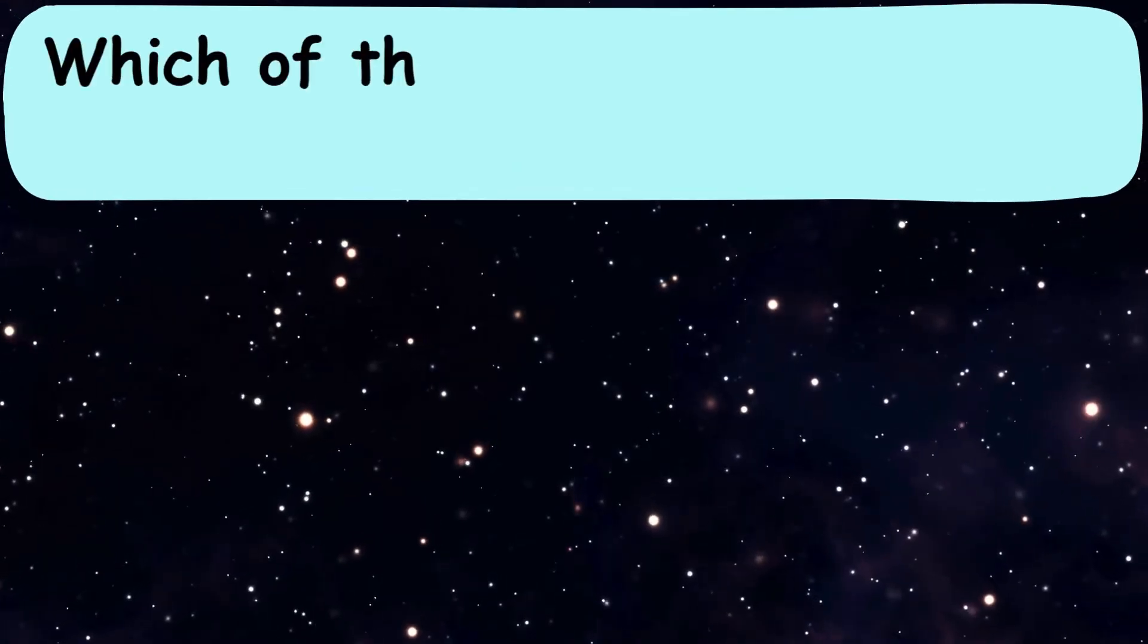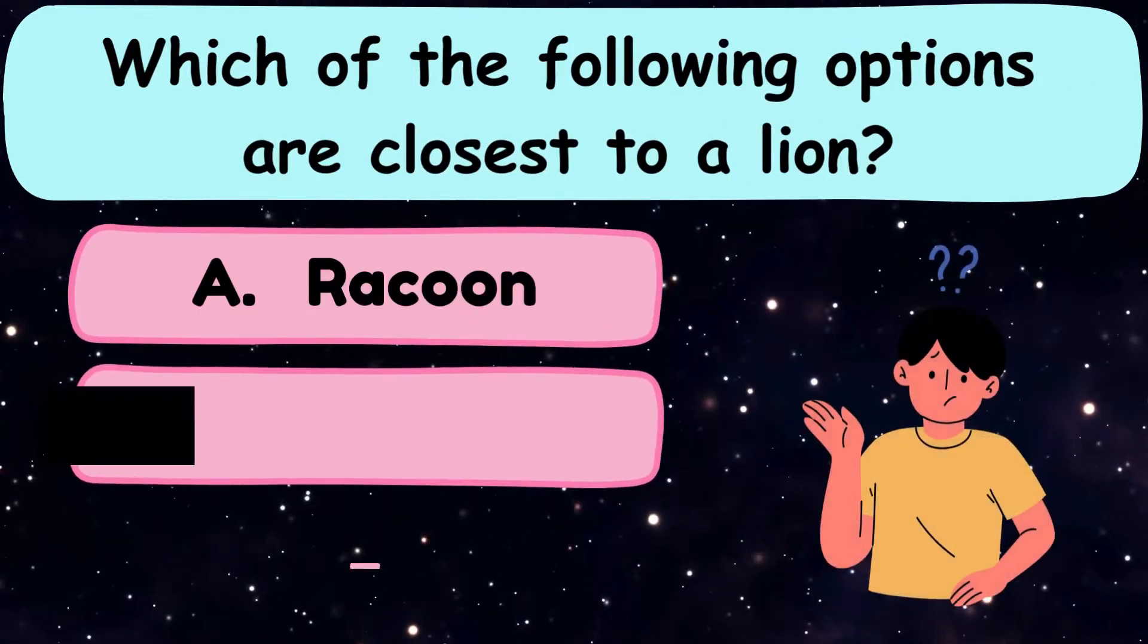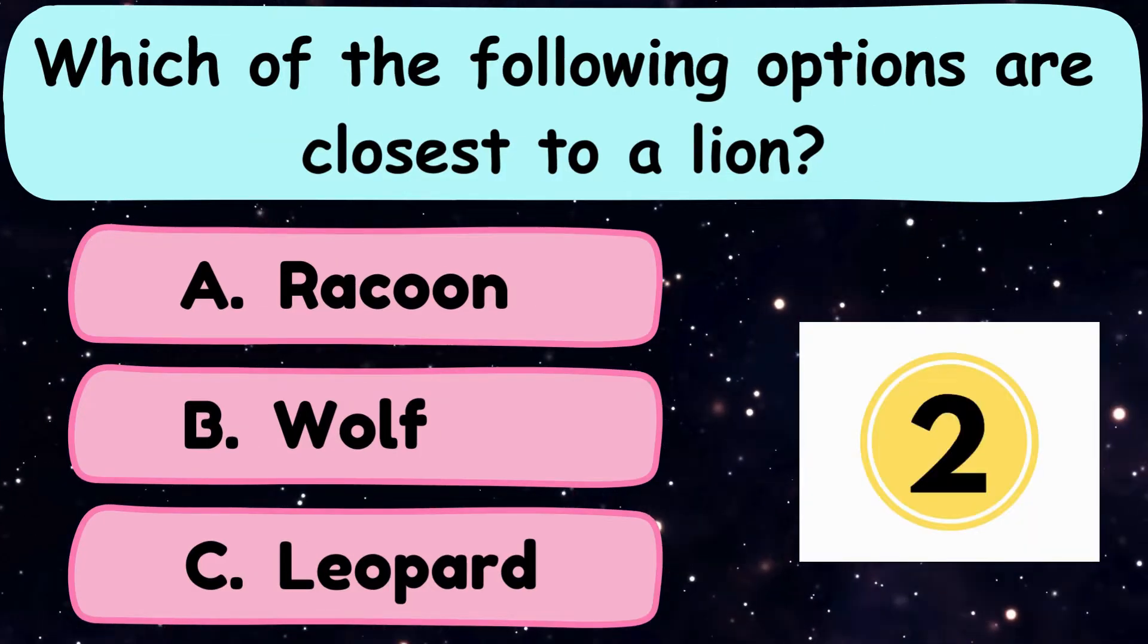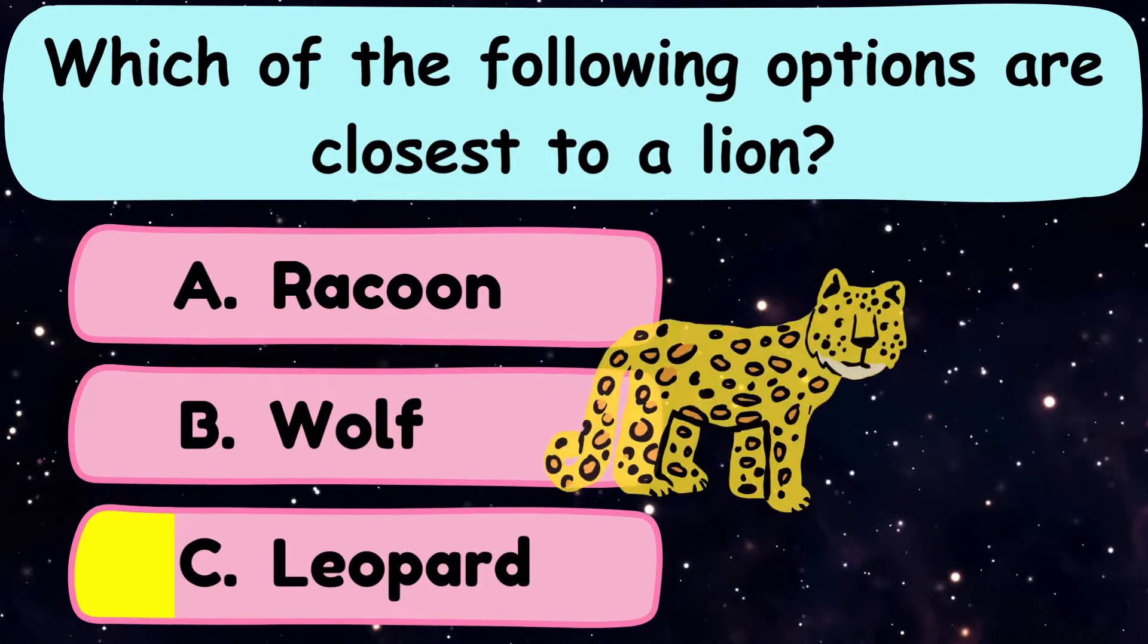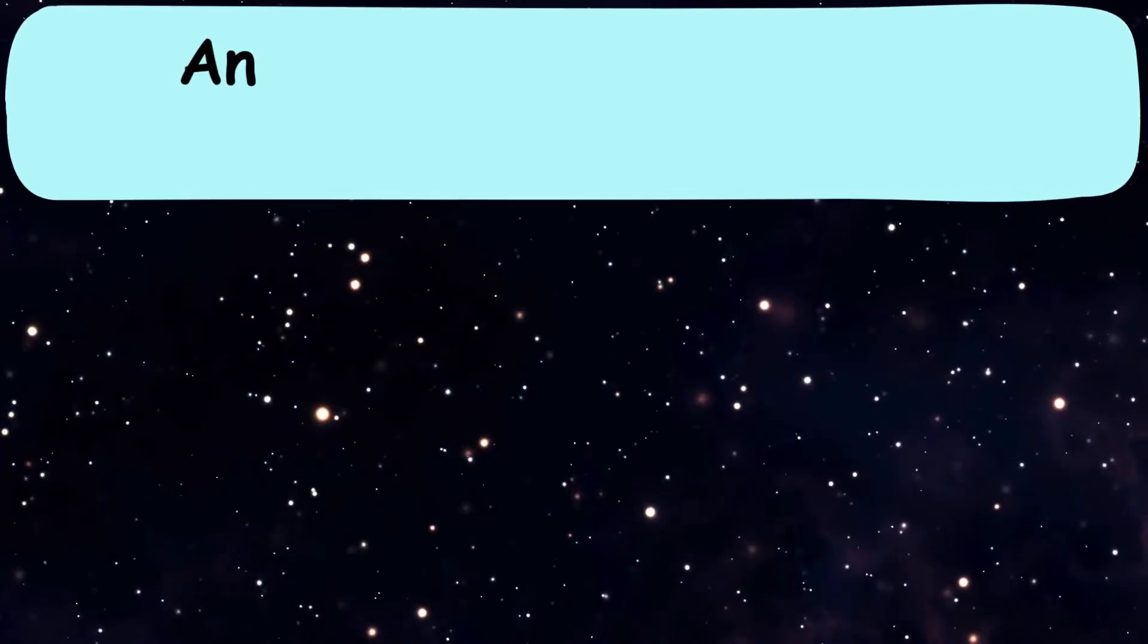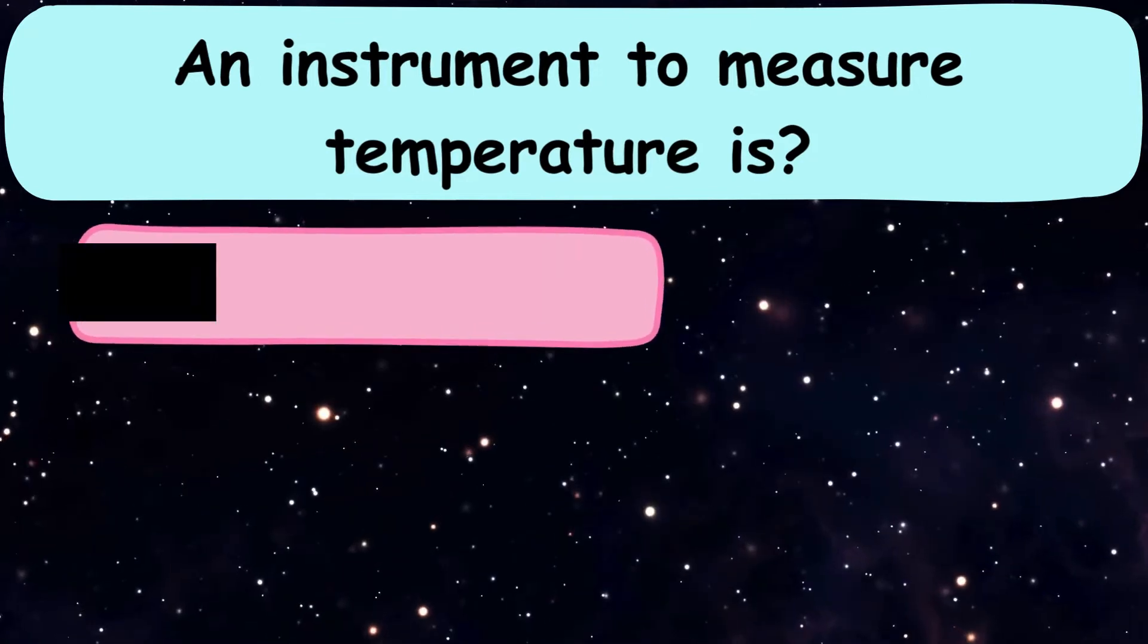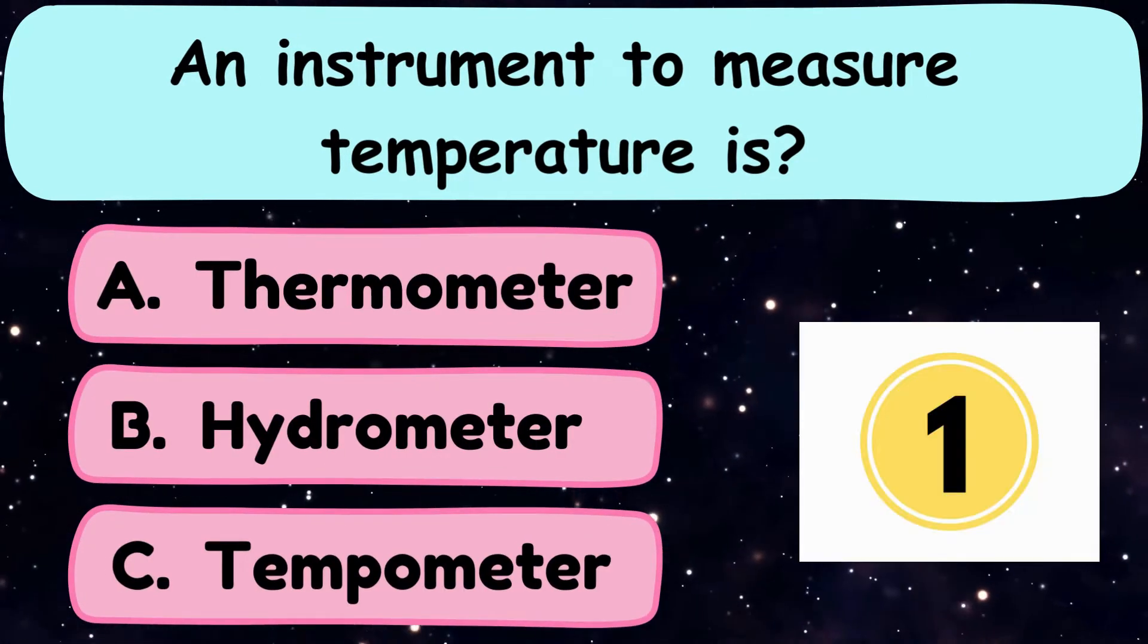Question number 5. Which of the following options are closest to a lion? A. Raccoon, B. Wolf, or C. Leopard? Question number 6. An instrument to measure temperature is A. Thermometer, B. Hydrometer, or C. Tempometer?